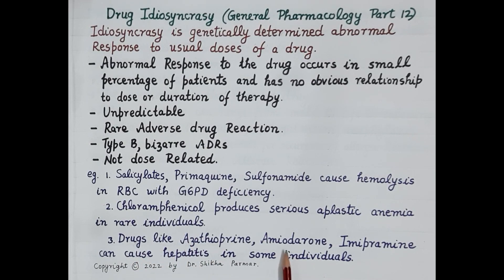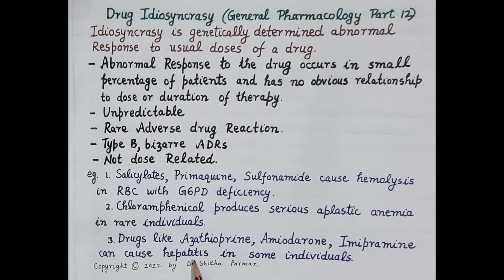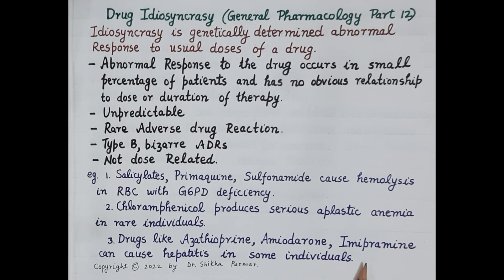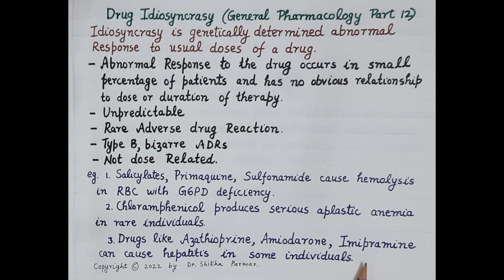Chloramphenicol produces serious aplastic anemia in rare individuals. Additionally, drugs like azathioprine, amiodarone, and imipramine can cause hepatitis in some individuals. This is a brief overview of the concept of idiosyncratic adverse drug reactions. If you find this video useful, please like, subscribe, and share. Thanks for watching.